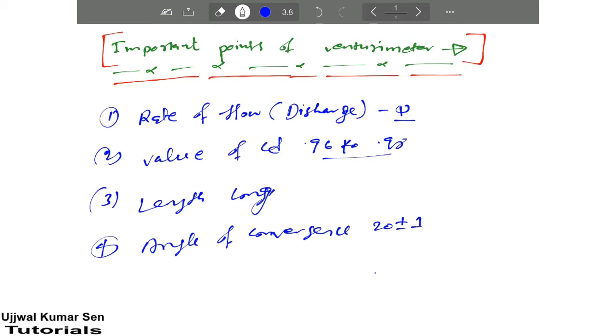Fifth point, which is also important, is the angle of divergence. The angle of divergence of Venturi meter is lying in between 5 to 15 degrees.